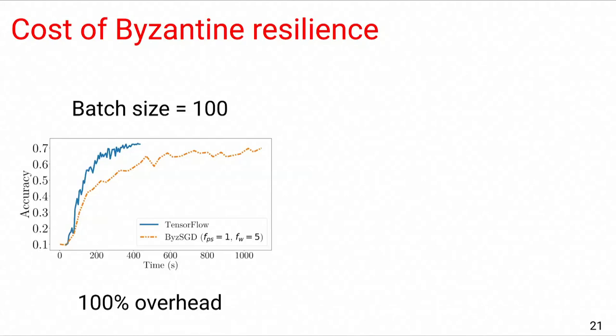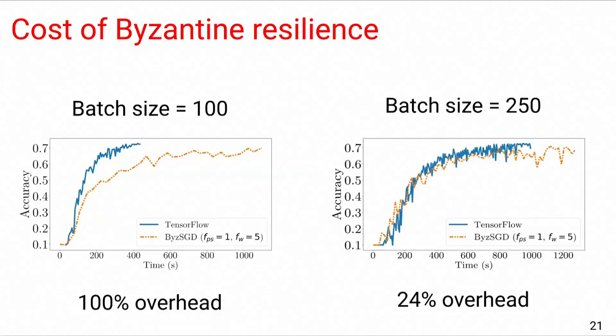The first observation we'd like to make here in this figure is that BizSGD can achieve a high accuracy very close to that of TensorFlow, and therefore we can see that BizSGD achieves learning convergence. Yet, we notice this big gap in performance between the two systems. We quantify this overhead by almost 100%. This experiment is done using a batch size of only 100. Yet, interestingly, if we increase the batch size to 250, we can see that this gap is reduced a lot, and the overhead here in this experiment is only 24%. The reason for this reduction in the overhead lies in the interplay between the computation overhead and the communication overhead with the batch size. On the one hand, BizSGD overhead primarily stems from the communication cost, but such an overhead is not affected by increasing the batch size. On the other hand, increasing the batch size increases the computation time and hence masking a bit the communication overhead of BizSGD, and therefore reducing the performance gap between the two systems.